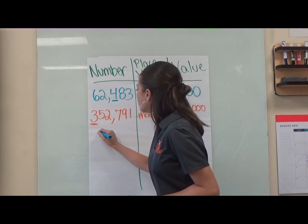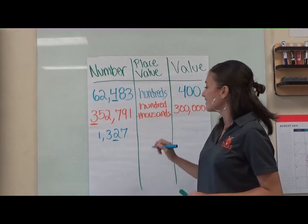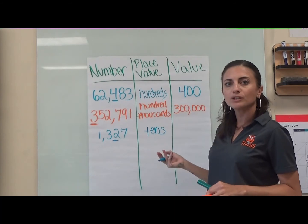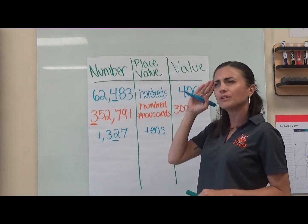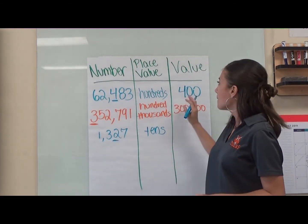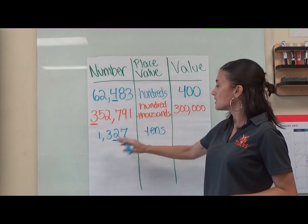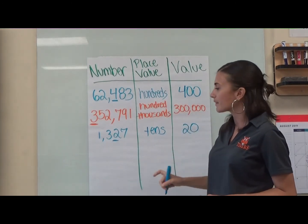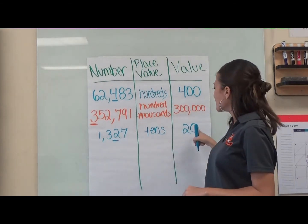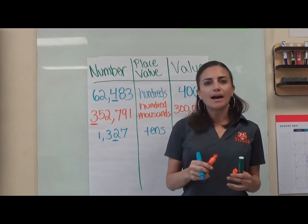Let's do one more before we wrap up. Let's try 1,327 with the two underlined. My place value is my tens — that's where the two is located. If you asked where is the two in this number, you'd tell me it's in the tens spot: ones, tens — it's in the tens spot, so that's my place value answer. But my value is a two in the tens spot, that's two tens, which equals twenty. I can check: my twos match, and there's one place value after it, so there should be one zero in my value — twenty.